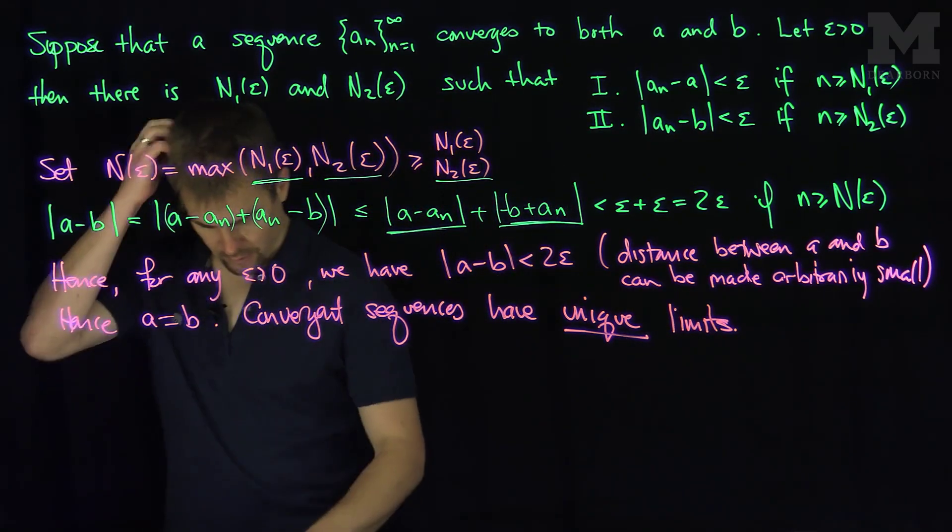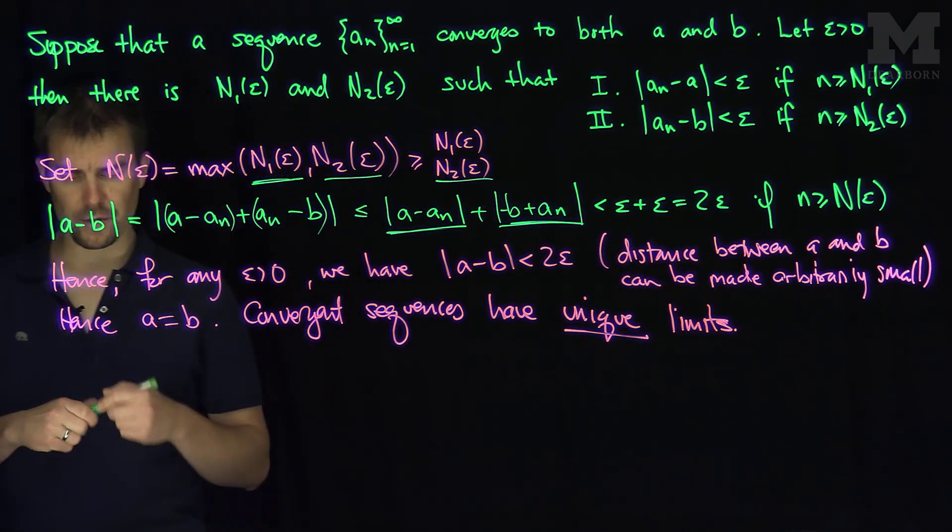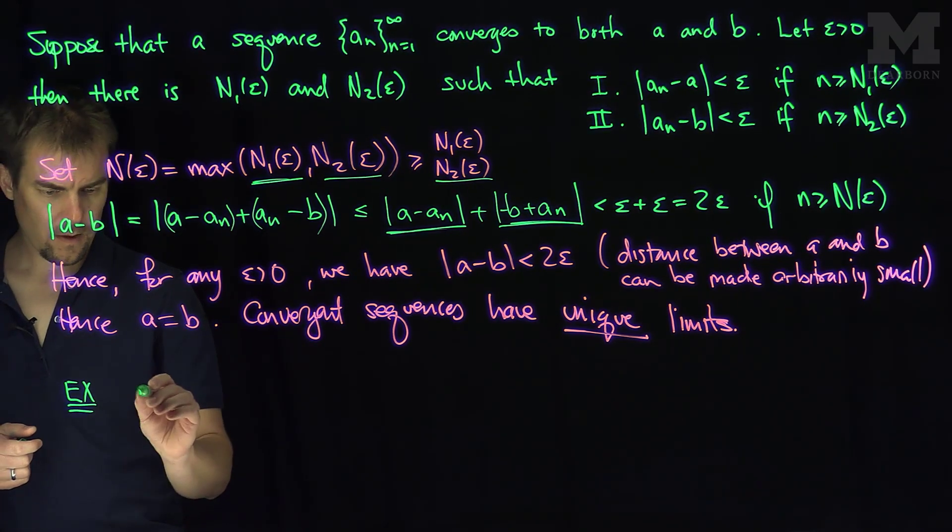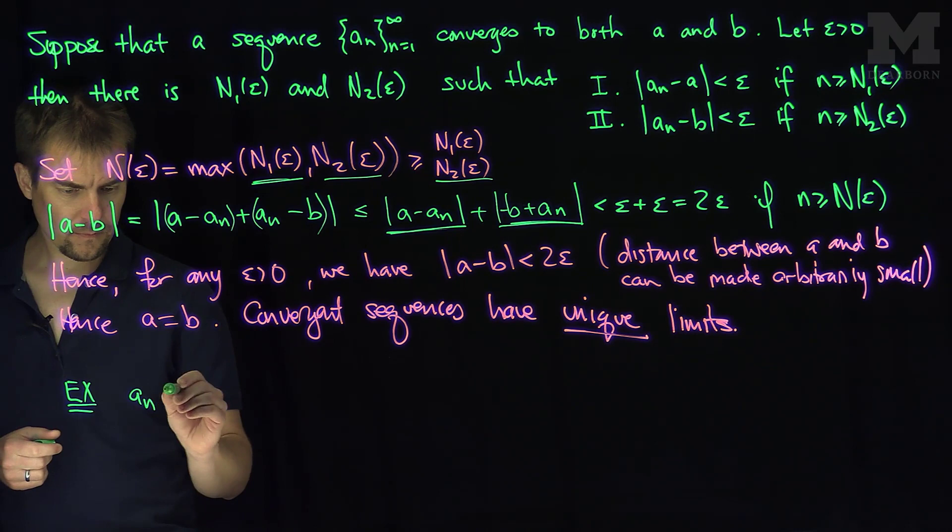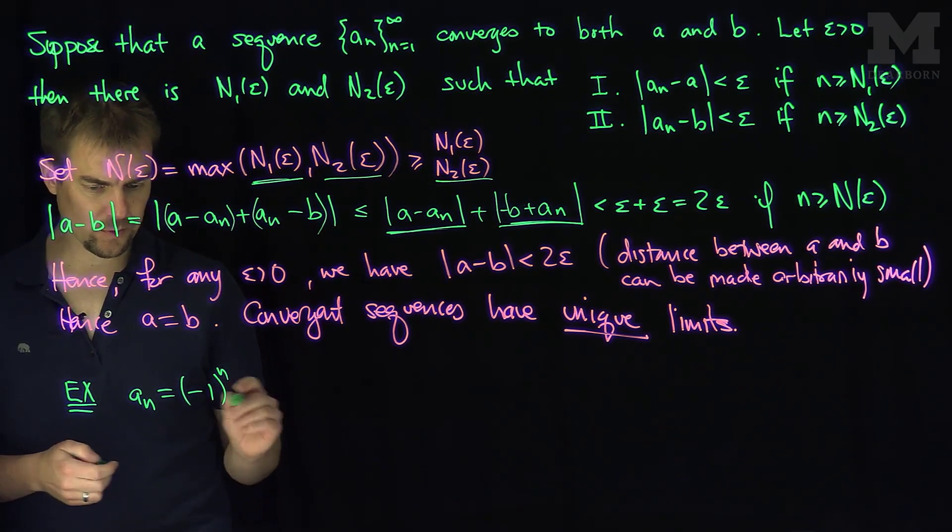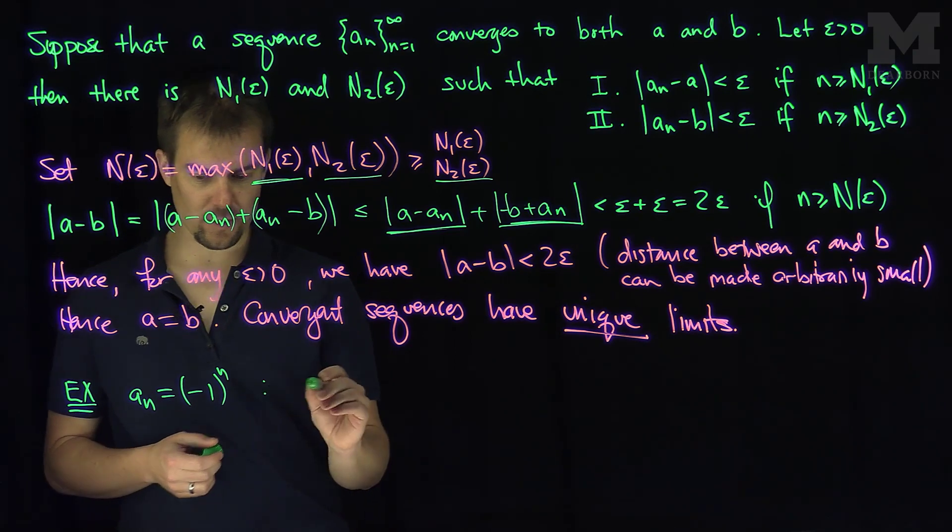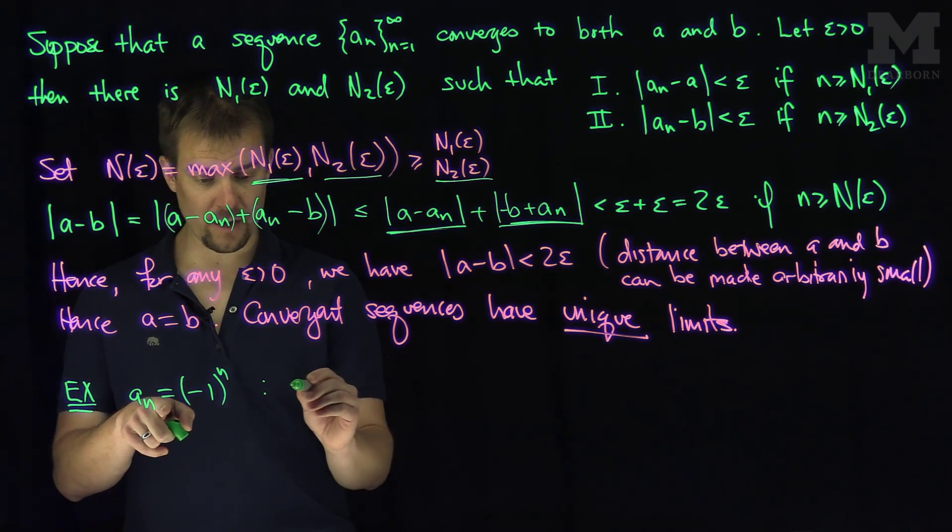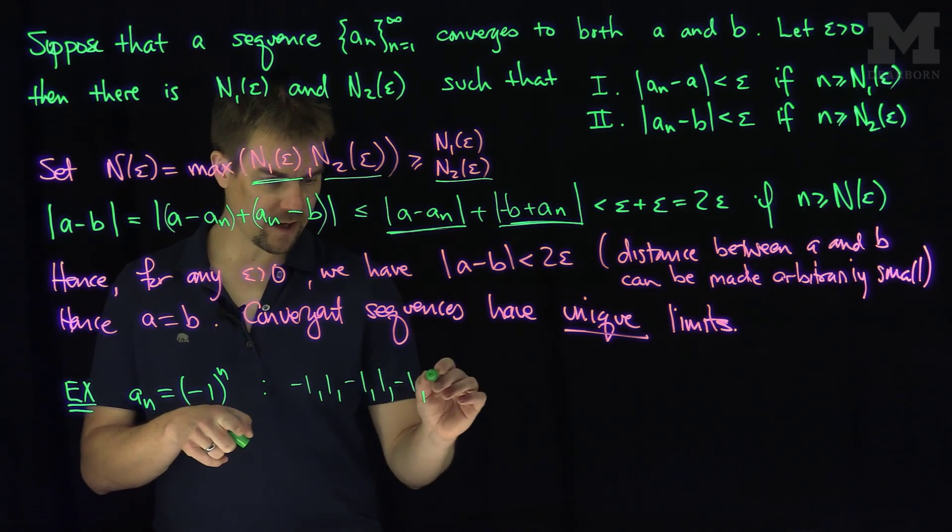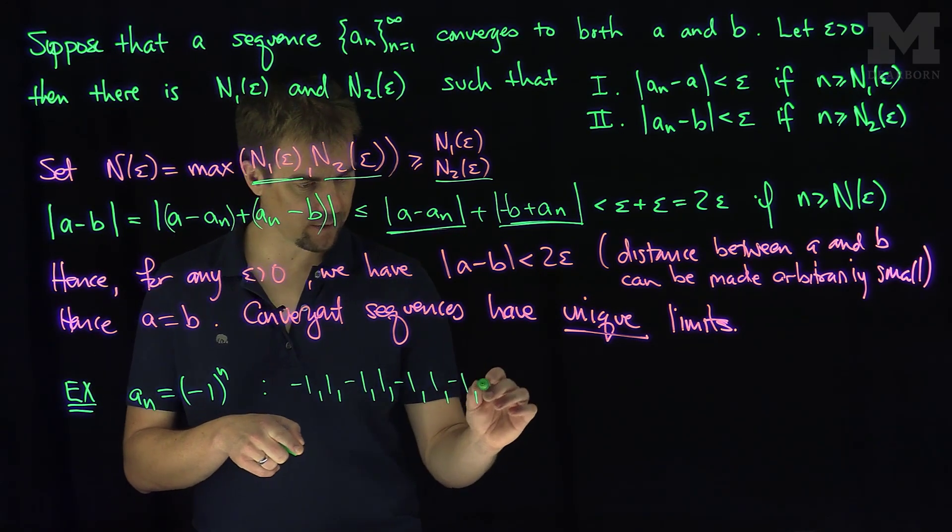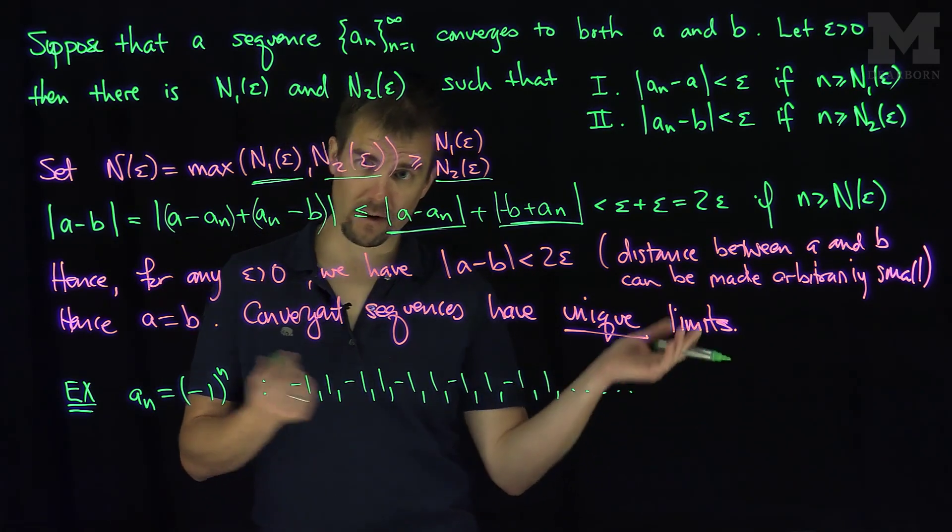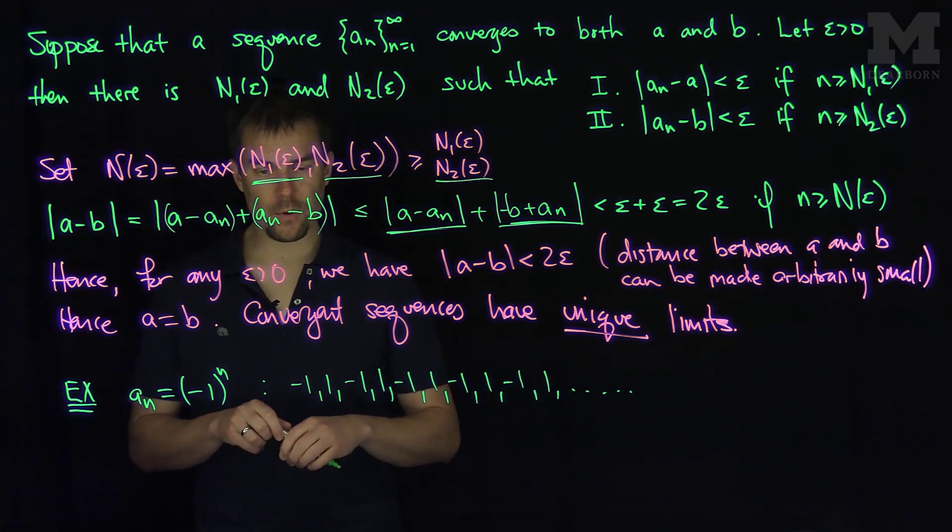Now, in application of that, this is very useful because we're going to start talking about sub-sequences eventually. But if we consider a_n to be equal to negative one to the n, what does this sequence look like? When n is equal to one, I have negative one, then one, then negative one, then one. This is blinking between negative one and one. It's the prototypical example of something where we have a periodic or oscillatory behavior forever.